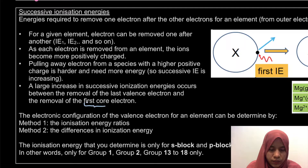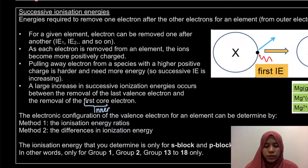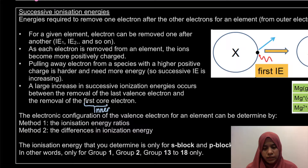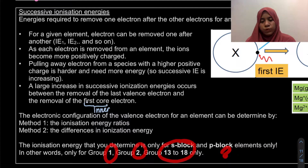The first core electron means our inner electron. From there, we can actually determine what is the electronic configuration of the element. This can be determined by two methods: the ionization energy ratio, or the differences in ionization energy. However, this can only determine the group for S-block and P-block elements only, which means groups 1, 2, and 13 to 18. Groups 3 to 12 are D-block and cannot be determined this way.